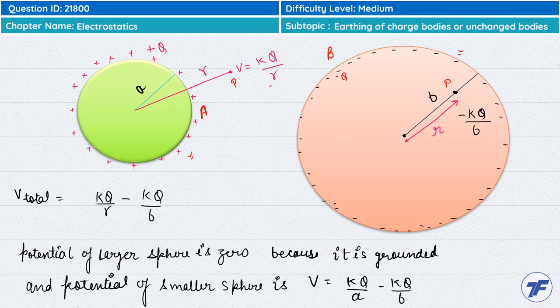To ek answer aa gaya jahan par R hamara lie karta hai A and B ke beech mein. Ab dusra option dekhte hain ki kya potential difference hoga.